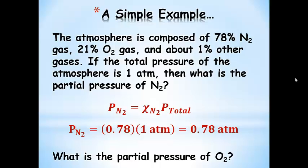Here's a simple example. The atmosphere is composed of 78% nitrogen, 21% oxygen, and about 1% of various other gases. If the total pressure of the atmosphere is one atmosphere, what is the partial pressure of nitrogen gas? The partial pressure of nitrogen equals the mole fraction — 78% converted to 0.78 — times 1 atmosphere, giving 0.78 atmospheres. Similarly, the partial pressure of oxygen is 0.21 atmospheres.